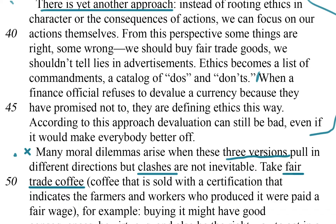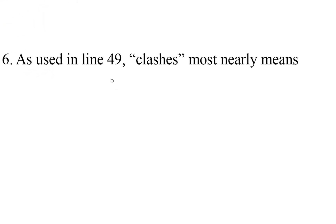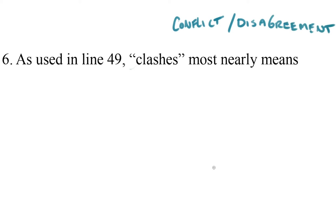So, three versions — they're talking about the three different ways set up in the passage about how economics can be ethical. Clashes are not inevitable. A clash literally means like a fight or a collision. So clashes aren't inevitable — how about conflicts or disagreements? Let's see if that does the trick. With that working definition in mind, I'm going to write it down: conflict or disagreement. That's what I think it means here.